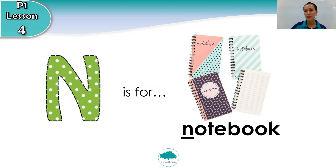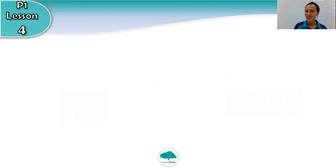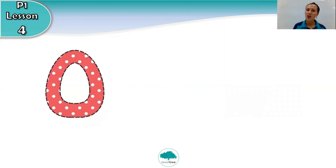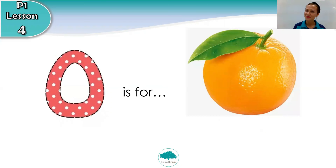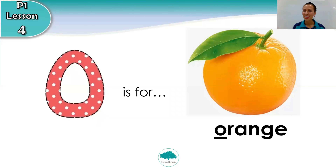And for P1, you will need a notebook to write in English class. Our next letter is letter O. Letter O is for orange. Can you repeat? Orange. Very good!